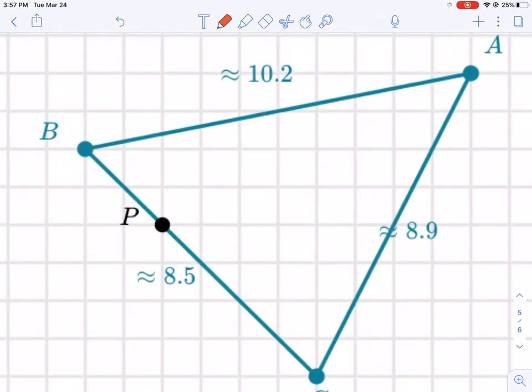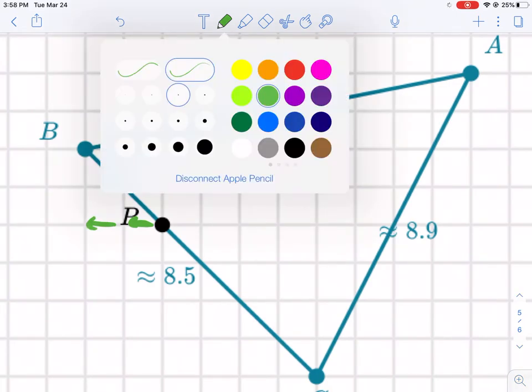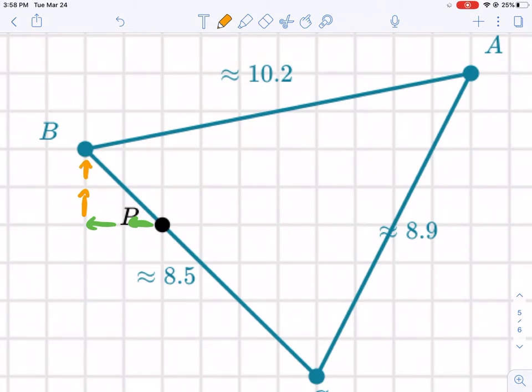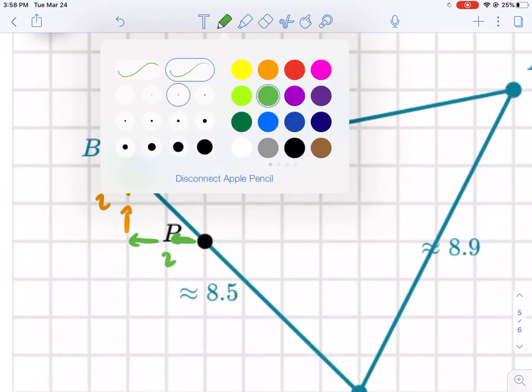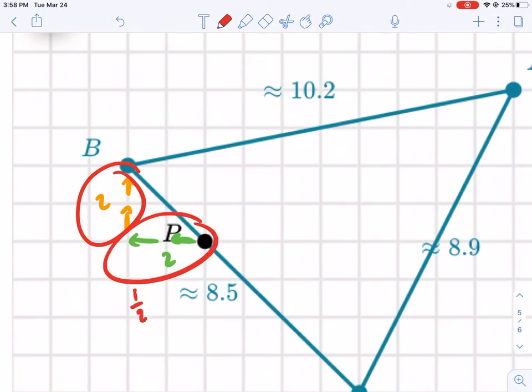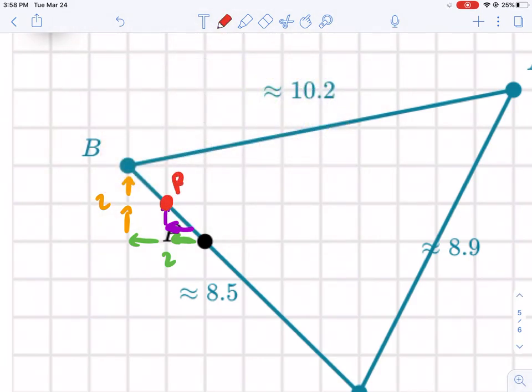So let's say P is our center of dilation. How would we go about finding where B becomes B prime? First we need to find the vertical and horizontal distance between these two points. My horizontal distance is to the left two and my vertical distance to get to point B from point P is two. If my scale factor is one half, I'm going to multiply both these distances by one half. So instead of going left two, I'm going left one; instead of going up two, I'm going up one. And that's my new point, B prime.